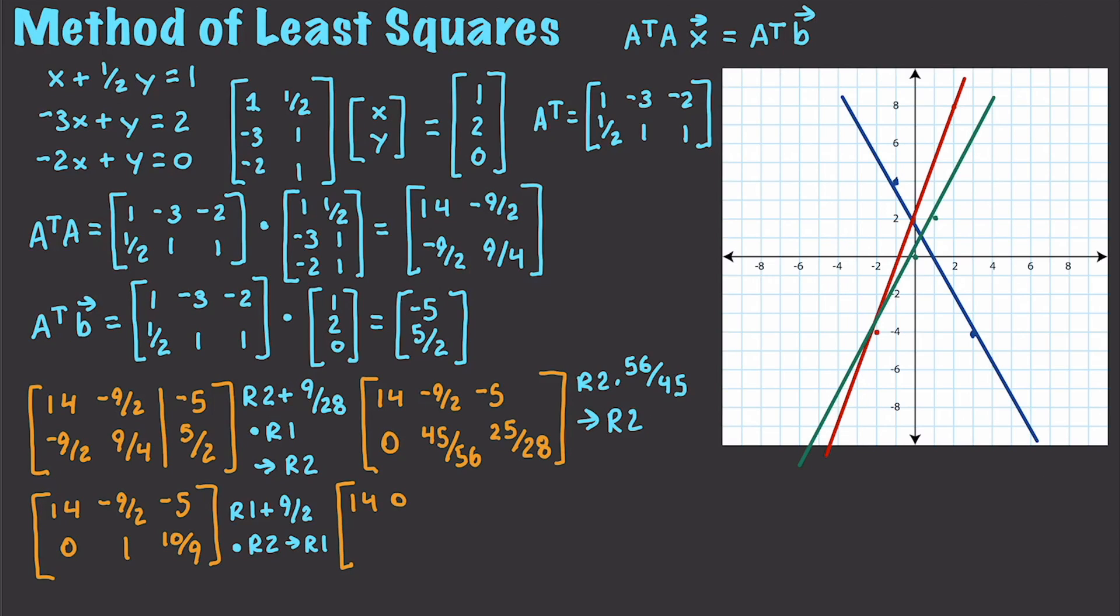times R2 and put that result in R1, which is going to give us 1, 0, 0, 1, 10 over 9. And then to get our final result, I go 1 over 14 times R1, which is going to give us 1, 0, 0, 1, 10 over 9 as our final answer.